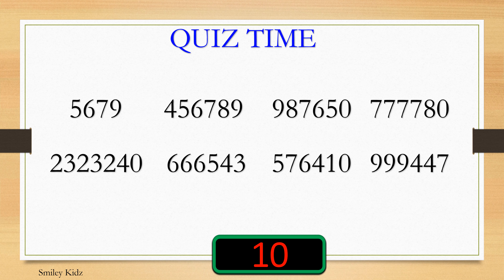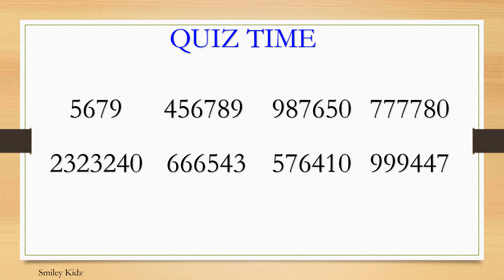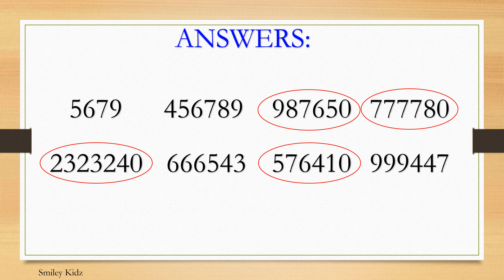Question: Circle the numbers which are divisible by 10. Answer: The circled ones are divisible by 10 because all the circled numbers have 0 in the unit's place.